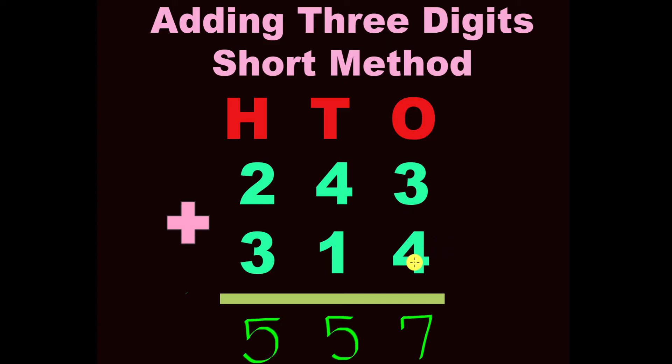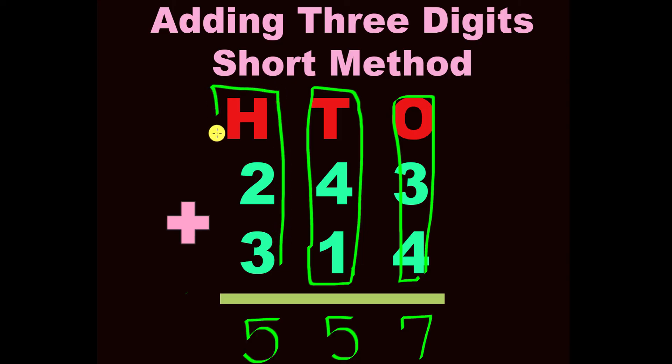You will begin with the ones. You will add the ones first. Three plus four. Then you will travel over and add the tens place. Four plus one. And your last visual is that you will add the hundreds place. Two plus three. Straight down. And you will get the whole number, five hundred fifty-seven.